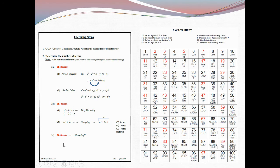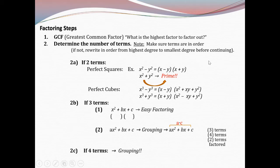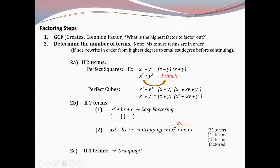The factoring steps: Step one is the GCF — the greatest common factor — the highest factor to factor out. Then step two: determine the number of terms, and make sure terms are in order from highest degree to smallest degree. If you have two terms, you'll deal with perfect squares or perfect cubes. If you have three terms, I call it easy factoring — the form x² + bx + c — or factoring by grouping when the leading coefficient isn't one, where you multiply A times C. If it's four terms, it's factoring by grouping.